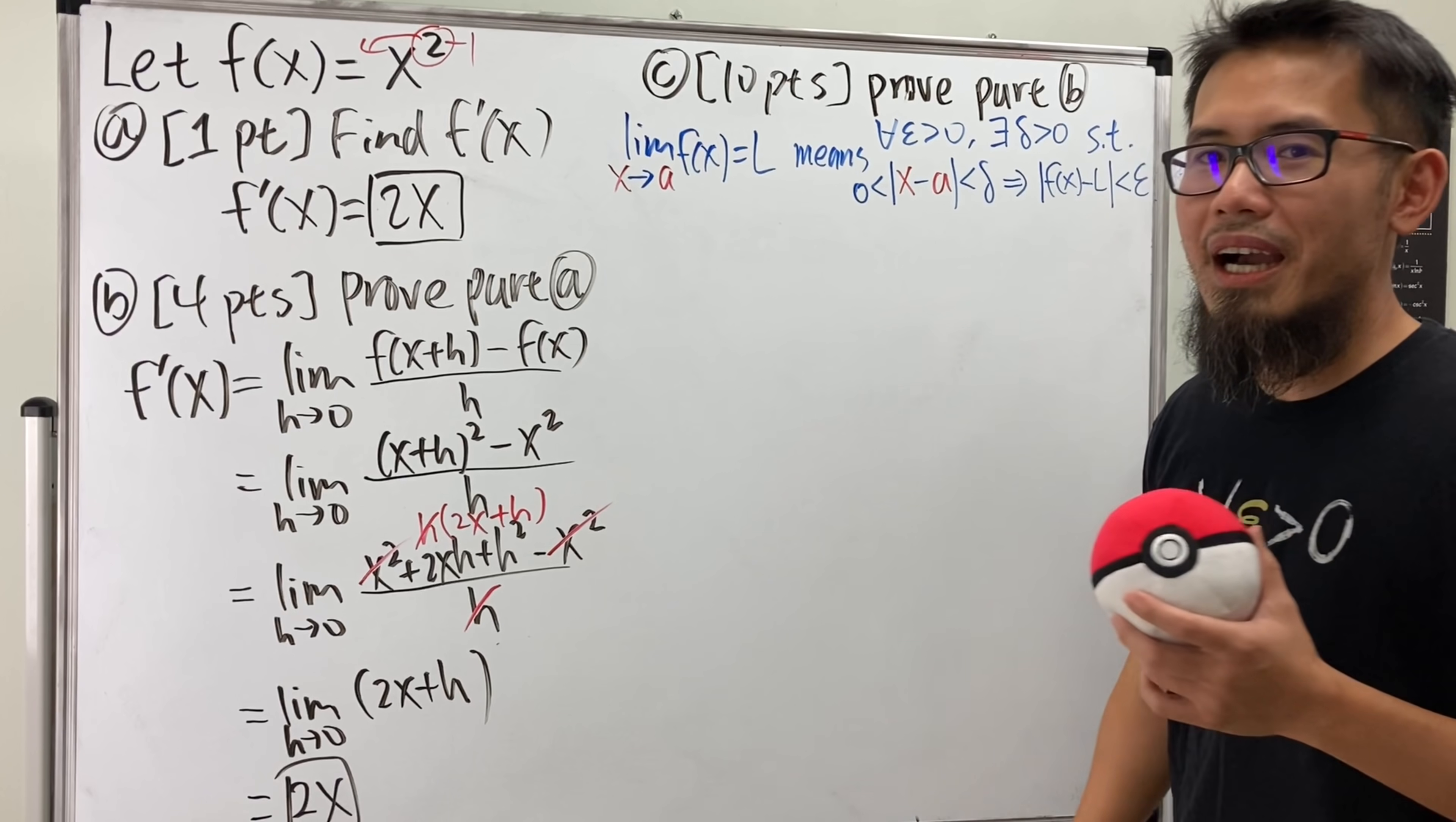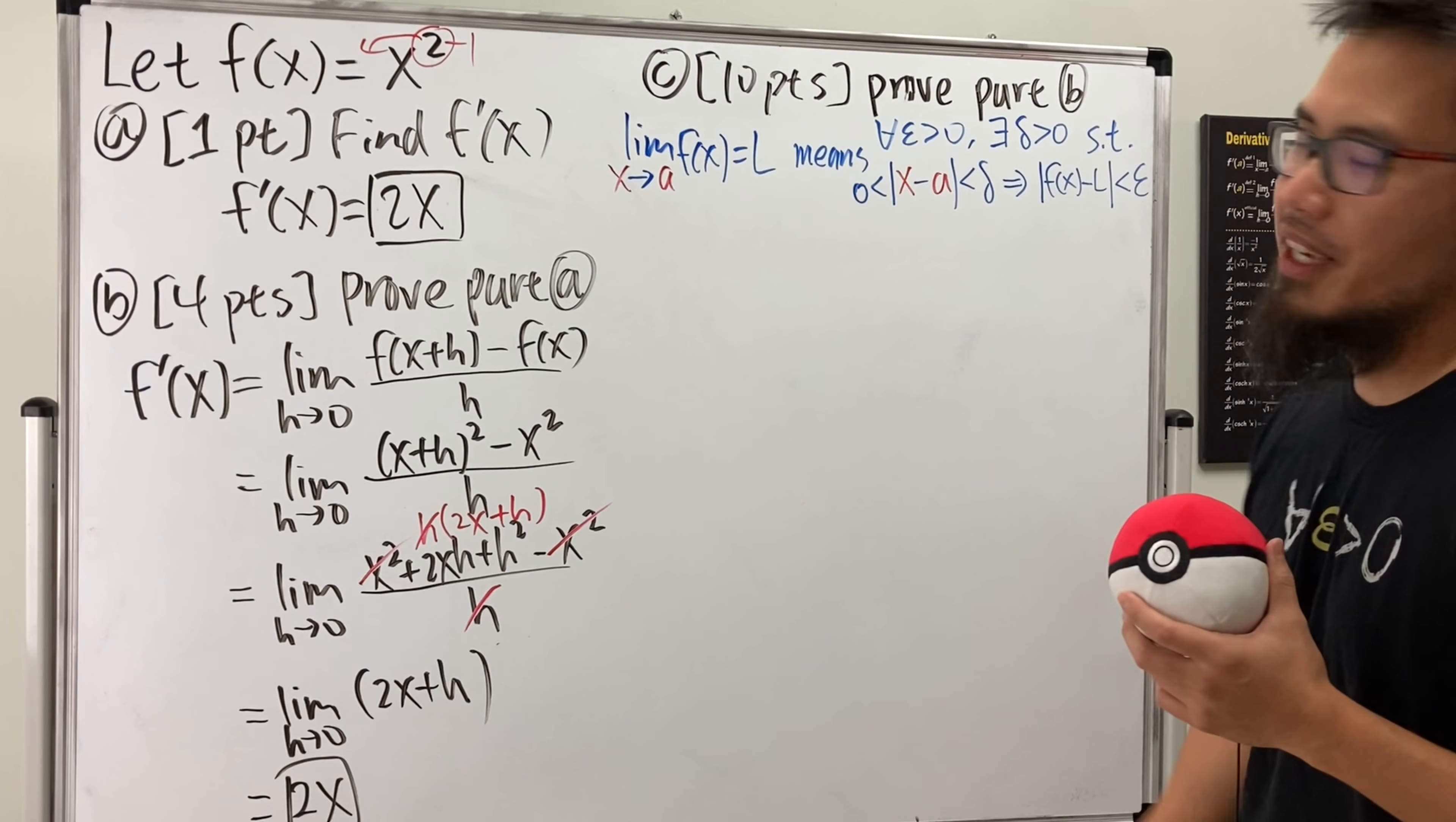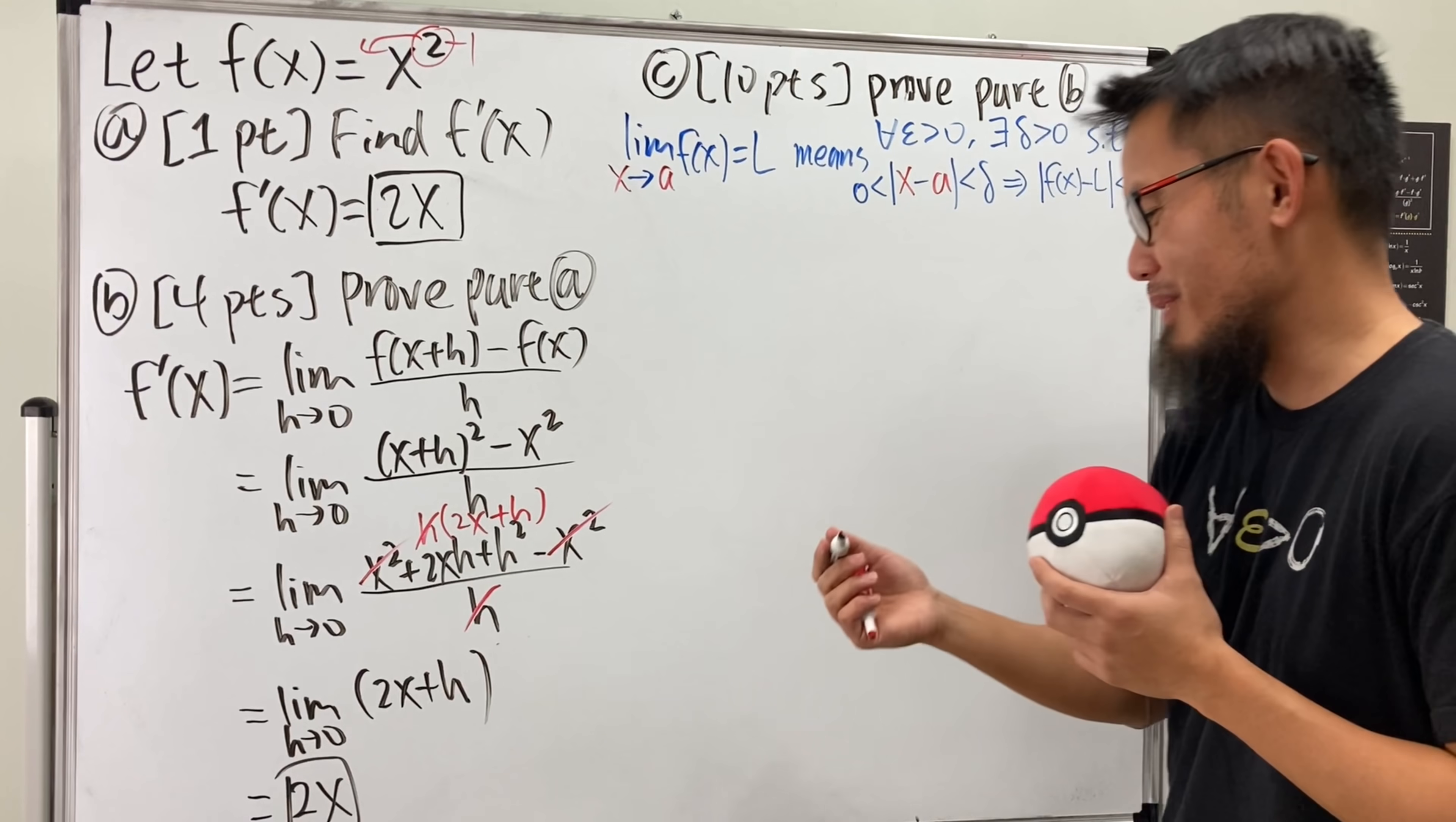And by this, you can see why I wasn't joking. When you have an epsilon-delta definition question on the Cal-1 test, that's almost like a GPA killer, right? So, no clipping in this video, I meant to say, well, I, I'm, yeah, you know what I mean by that. But anyway, let me show you guys how to work this out, right?